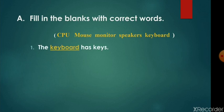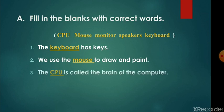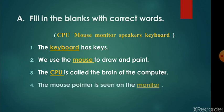Number one: the keyboard has keys. Number two: we use the mouse to draw and paint. Number three: the CPU is called the brain of the computer. Number four: the mouse pointer is seen on the...